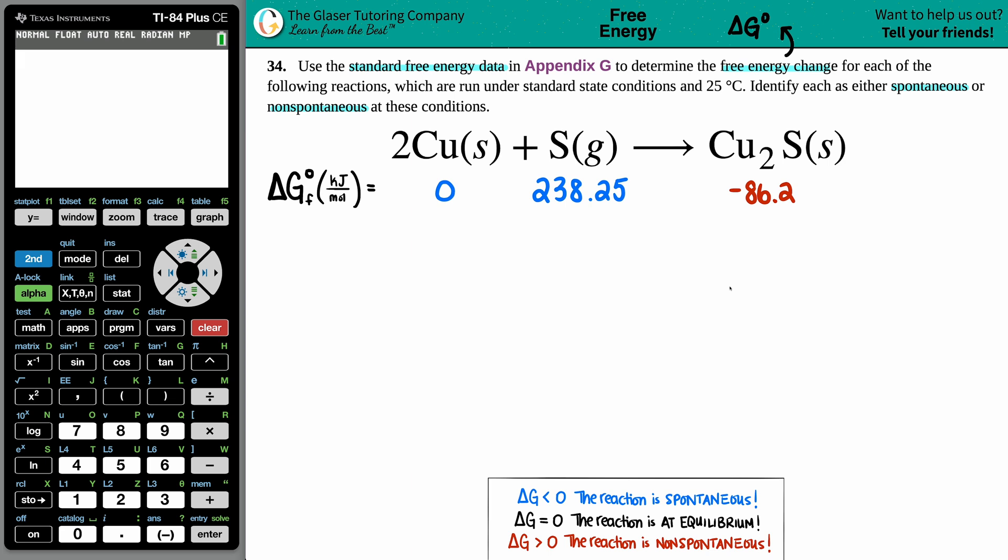What is the formula if we just have delta G values? Well it's this: Delta G for the whole entire reaction equals the sum of your products minus the sum of your reactants.